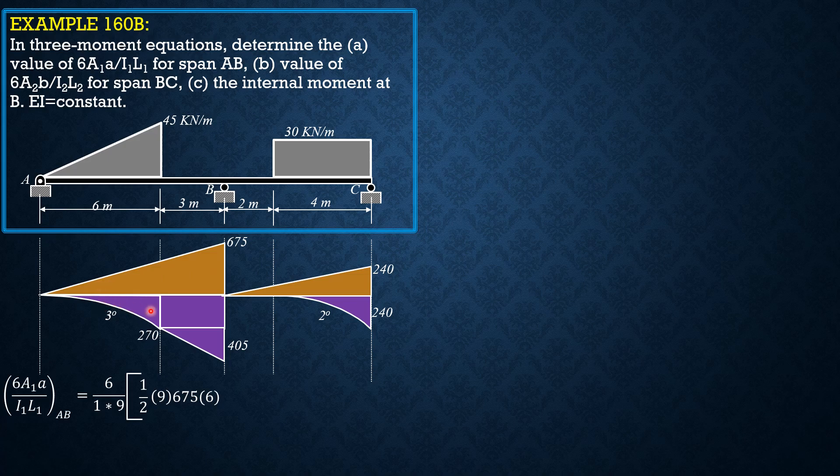Then, minus the area of this third degree curve, 1 fourth of 6 times 270. This distance is 6 over degree plus 2, so 6 over 5, 1.2. So, the distance of the centroid from the left is 4.8. So, 1 fourth of 6 times 270 times 4.8 minus the moment of area of this rectangle, which is 3 times 270. Because this is 1.5, the distance of the centroid from the left is 7.5. So, minus 3 times 270 times 7.5.